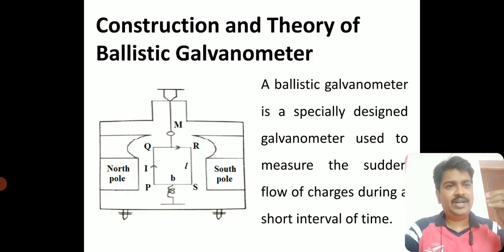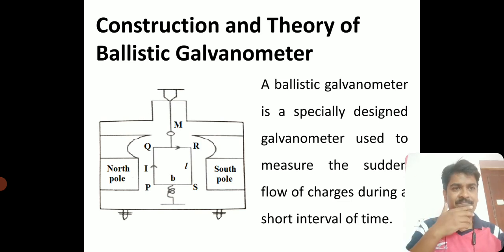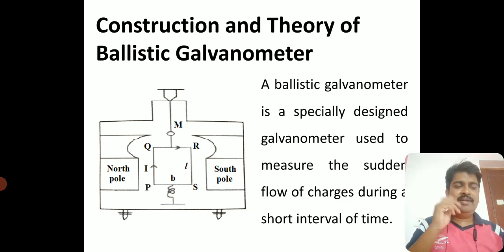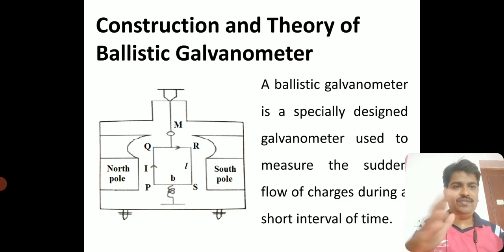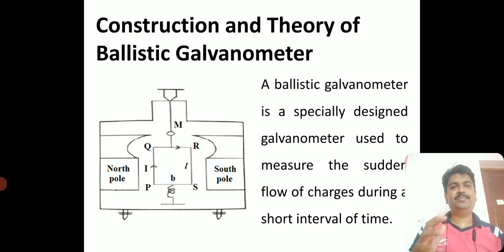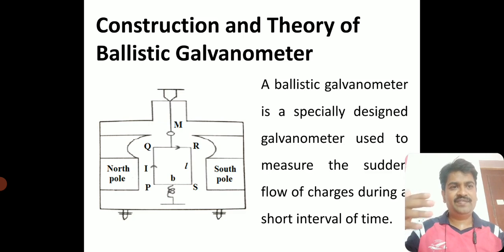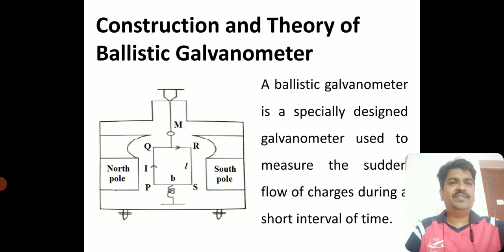The ballistic galvanometer is a specially designed galvanometer used to measure the sudden flow of charges for a small interval of time. Even ordinary ammeters measure current, but they cannot measure a sudden flow of charge. This is a very sensitive instrument which measures sudden flow of charge for a short interval of time.